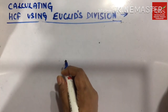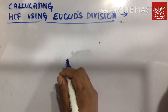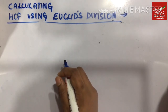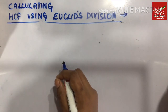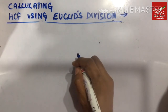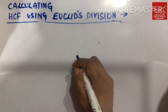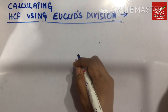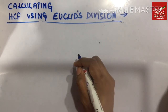Hi students, let us today see how to calculate HCF using Euclid's division. This is another method which is also popularly known as the long division method. We have already learned how to calculate the HCF using the prime factorization method, which is the repeated division method. So knowing one more method definitely adds to our confidence levels. Let us today see this new method, which is Euclid's division method.